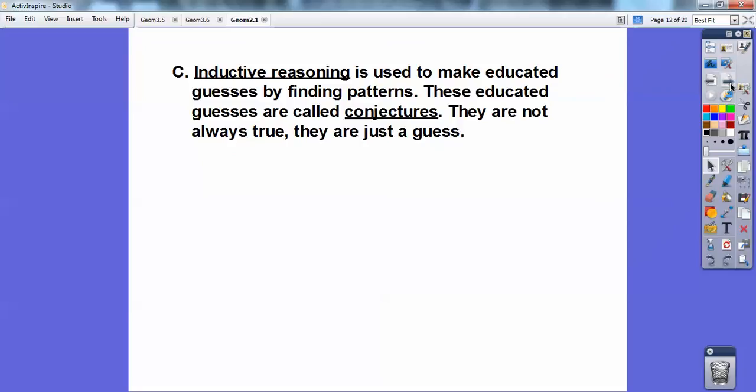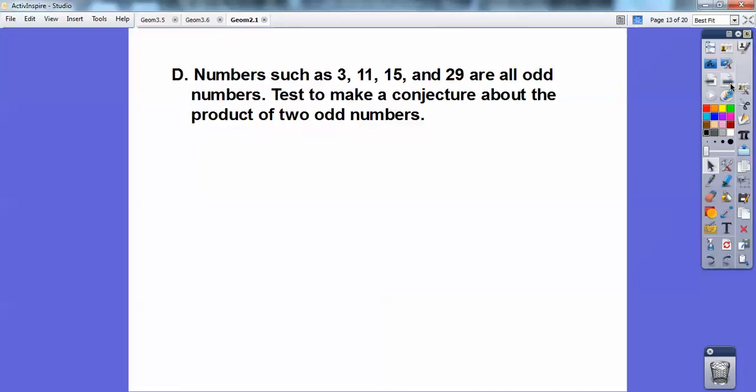All right, so inductive reasoning is used to make educated guesses by finding patterns. These educated guesses are called conjectures, and they're not always true. They're just a good, educated guess. All right, so numbers, here's an example. Numbers such as 3, 11, 15, 29, there's no particular order of those, but they're odd numbers.